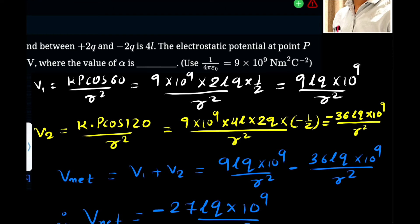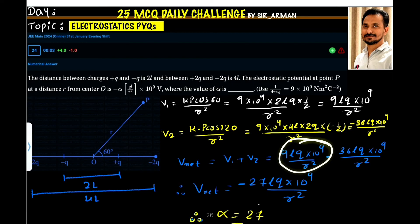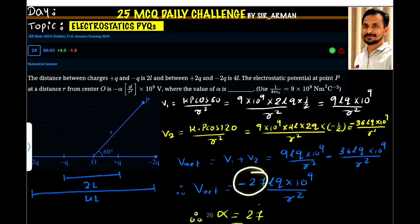Both expressions are similar but we have minus 36 for the second and 9 for the first. Since electric potential is a scalar quantity, the net electric potential is V1 plus V2. V1 is 9LQ times 10 raised to 9 by R squared, and V2 is minus 36LQ times 10 raised to 9 by R squared. So 9 minus 36 is minus 27. Comparing with the given equation, the value of alpha is 27.